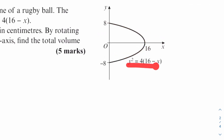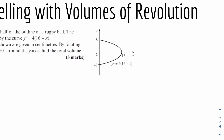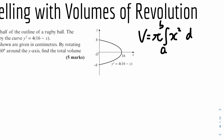We're given the equation y squared equals 4 times 16 minus x, and we have to rotate this around the y-axis. So we know the volume formula in general form is: volume equals pi times the integral from A to B of x squared dy. We're given y squared so we have to rearrange to find x squared.